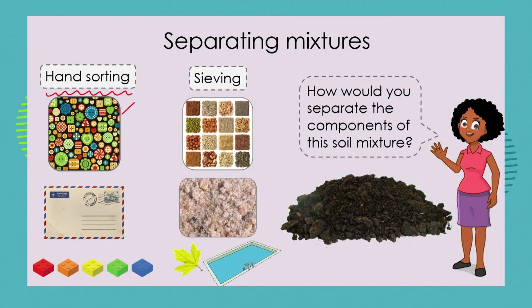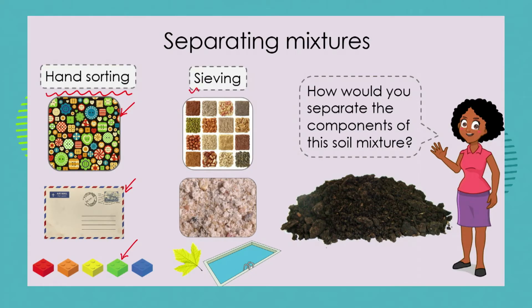We would separate buttons, mail, or different toys apart from each other simply by using our hands. But these items have to be large enough for us to see and large enough for us to be able to separate them. If the items become too small, we need to resort to some other strategy.